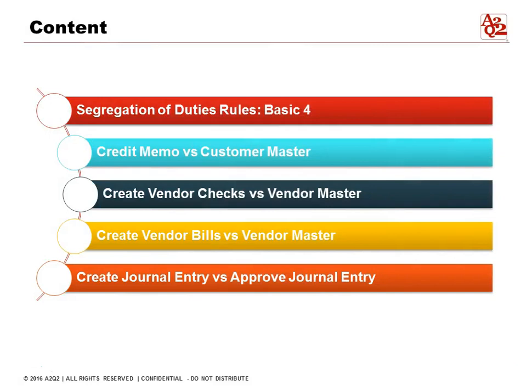We'll summarize the 4 basic rules, then go into detail on each of them: credit memo vs. the customer master, creating vendor checks vs. the vendor master, create vendor bills vs. the vendor master, and create journal entry and approving journal entries. These are the 4 basic ones that we think every company should look at. As you become more sophisticated, there will be lots of other rules, but for our purposes, we'll focus on these 4.